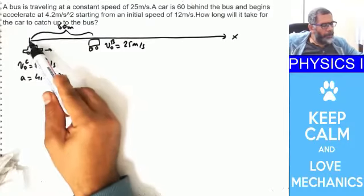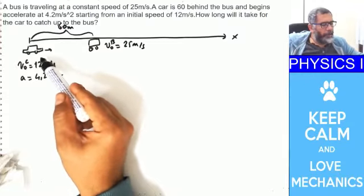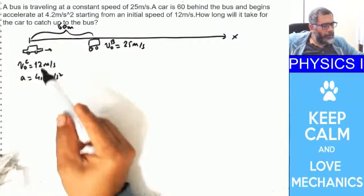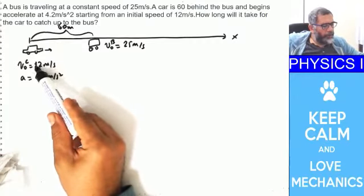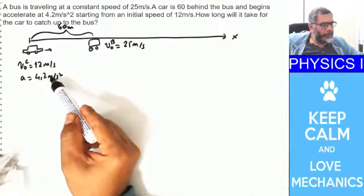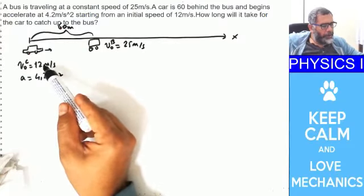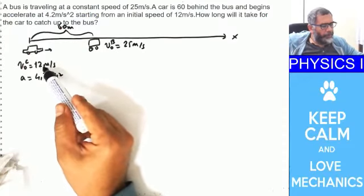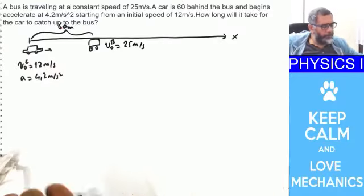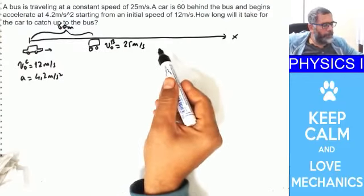For example, at t = 0 the car is going 12 meters per second. At t = 2 seconds the car is at 12 + 4.2 = 16.2 meters per second. At t = 3 seconds the car is at 12 + 2×4.2 meters per second, and so on. The car's speed keeps increasing while the bus goes at constant velocity.